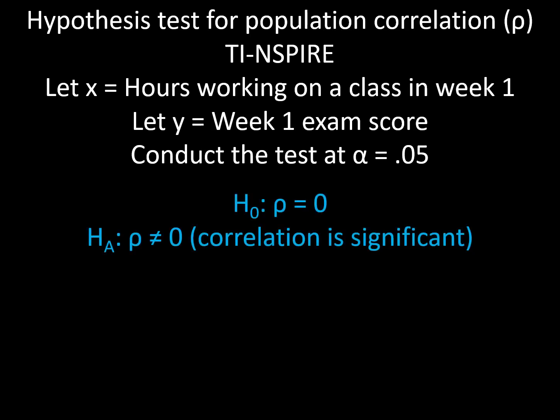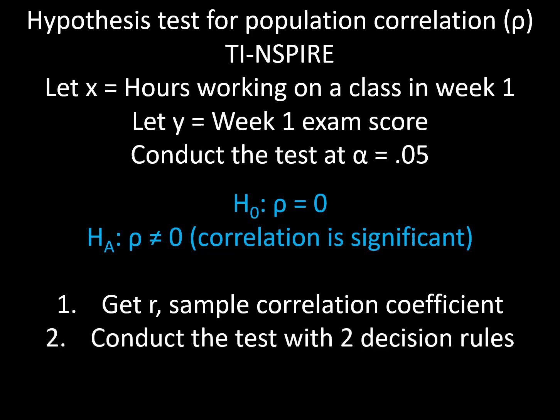Our null and alternative hypothesis will be rho equals 0 and rho not equal 0. If we reject the null we are claiming that correlation is significant between hours spent working on this class and the exam score. The first step is that we will get the correlation coefficient r for our sample, then we'll conduct the test using two decision rules and reach a conclusion.